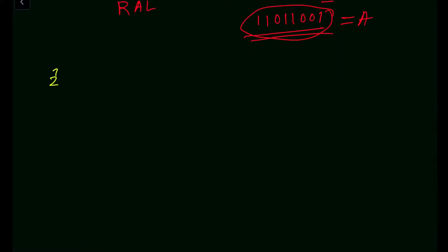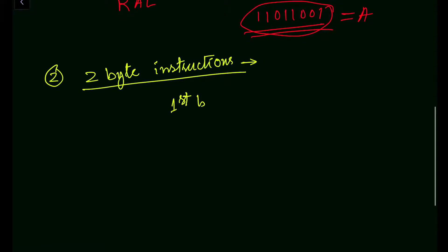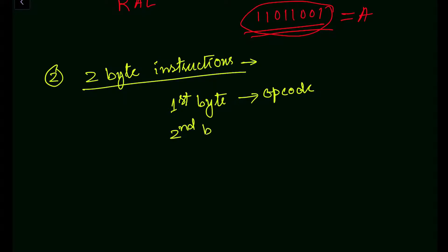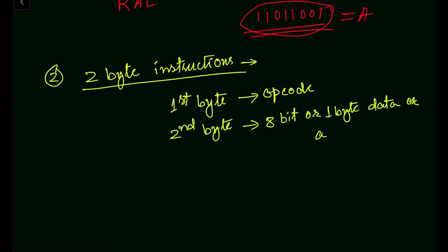In the case of a two-byte instruction, the first byte — which is 8 bits — will be the opcode, and the second byte will be the operand, which is either 8-bit data or an 8-bit address. So the first byte is the opcode and the second byte is 8-bit data or an 8-bit address. A two-byte instruction consists of 2 bytes, meaning 2 times 8 bits.